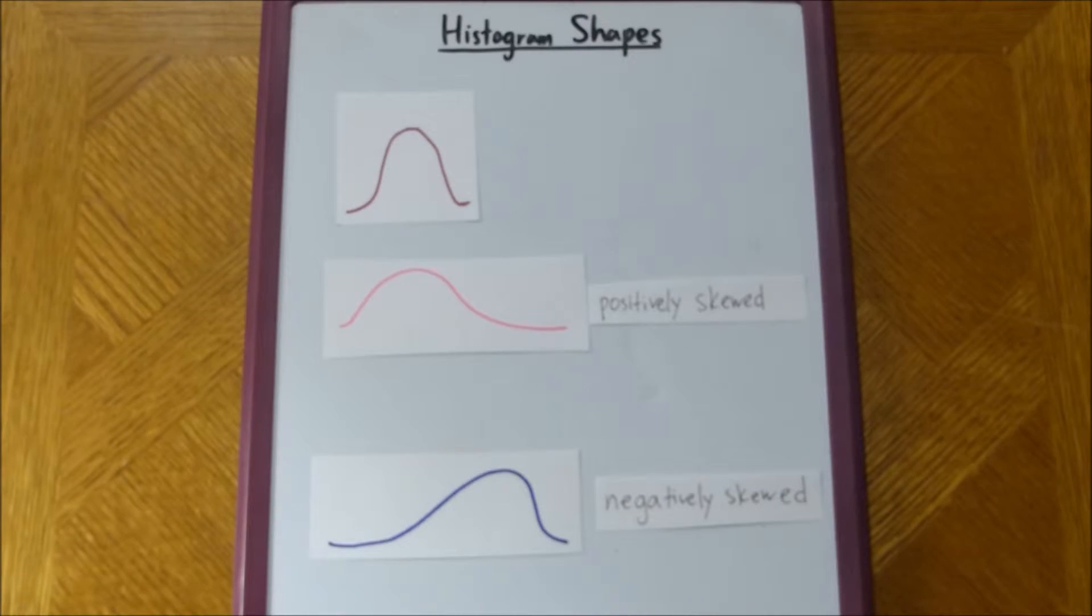We call the first one positively skewed, because the upper tail of the histogram stretches out much farther than the lower tail, right? You can see here, stretching out.